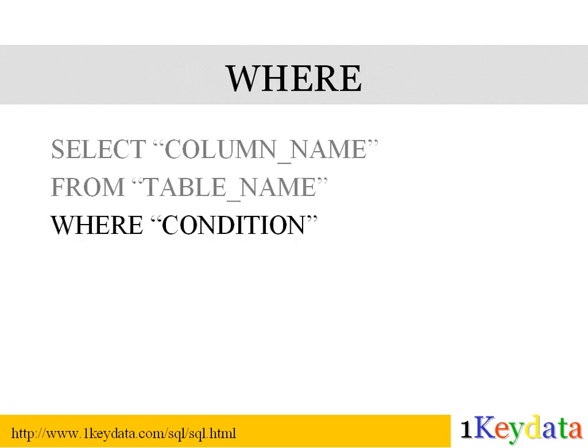Next, we look at the WHERE keyword. In the previous example, we are retrieving all records from a table. While we do want to do this sometimes, more frequently we want to select only a subset of the data. When we want to filter our results, we use the WHERE keyword after the FROM keyword. So the syntax becomes: SELECT column_name FROM table_name WHERE condition. Condition is where we specify how we want the data to be filtered. For example, we may specify that only people whose first name starts with A is selected.